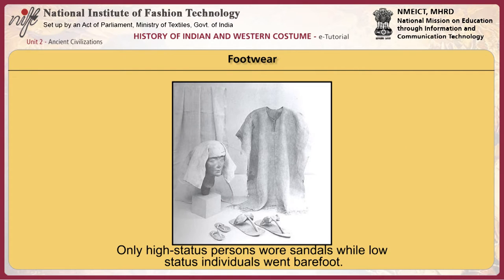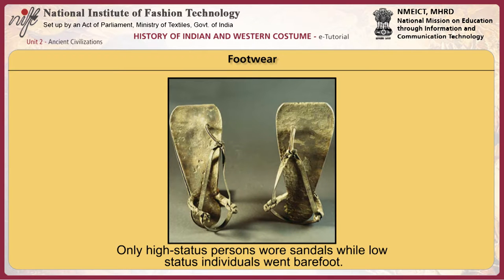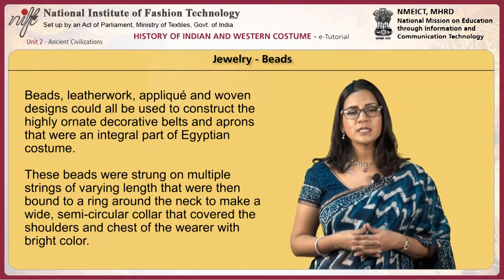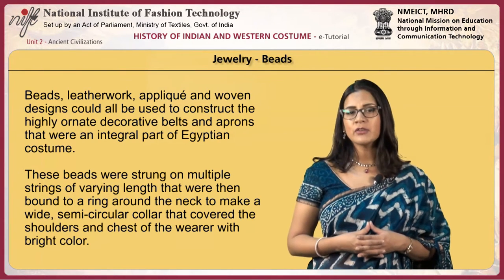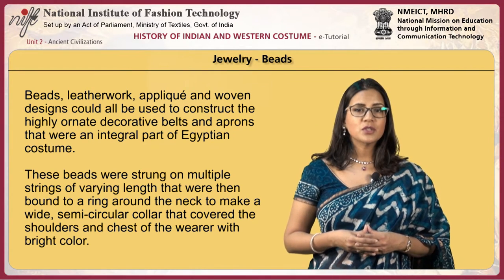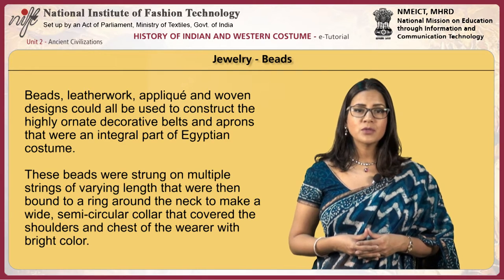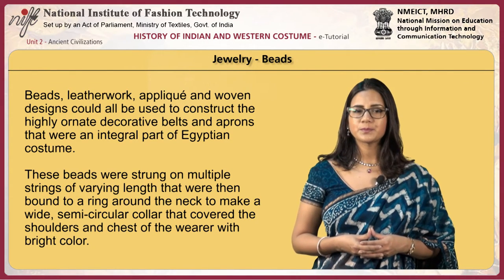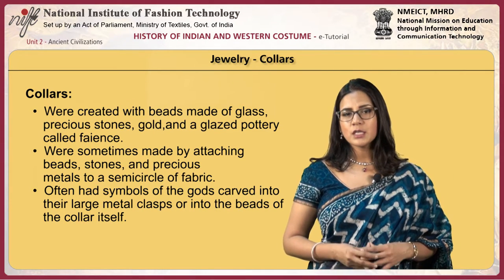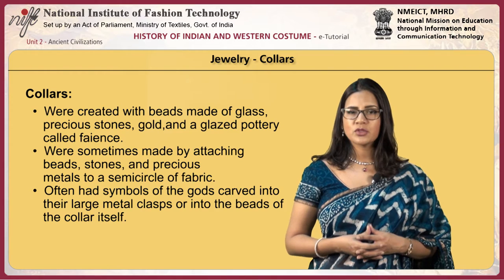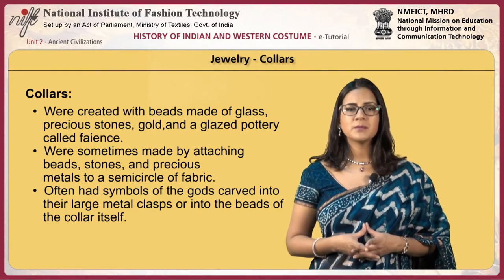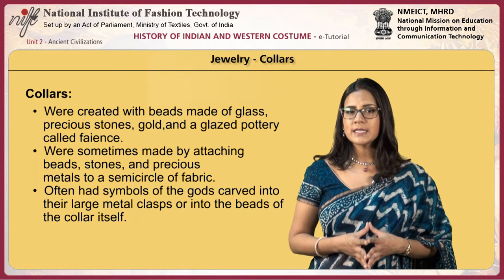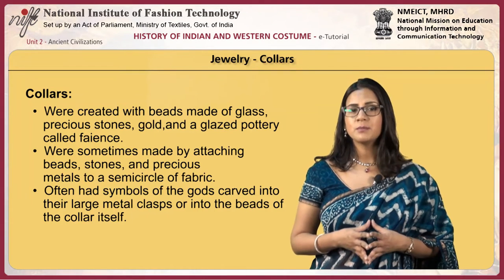Only high-status persons wore sandals while low-status individuals went barefoot. Beads, leatherwork, applique and woven designs could all be used to construct the highly ornate decorative belts and aprons that were an integral part of Egyptian costume. These beads were strung on multiple strings of varying lengths, bound to a ring around the neck to make a wide semi-circular collar that covered the shoulders and chest with bright color. Collars were created with beads made of glass, precious stones, gold and a glazed pottery called faience. Collars were also sometimes made by attaching beads, stone and precious metals to a semi-circle of fabric, and often had symbols of the gods carved into the large metal clasps or into the beads.